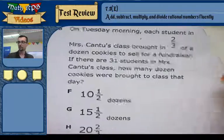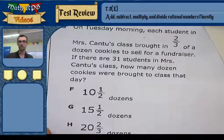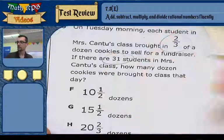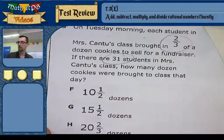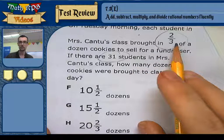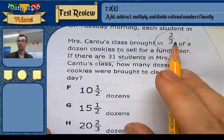Question number 6. On Tuesday morning, each student in Mrs. Cantu's class brought in two-thirds of a dozen cookies to sell for a fundraiser. If there are 31 students in Mrs. Cantu's class, how many dozen cookies are brought to class that day? Alright, so it looks like we're going to be each student bringing in two-thirds. So I'm going to be adding two-thirds for every student, so repeated addition or multiplication.